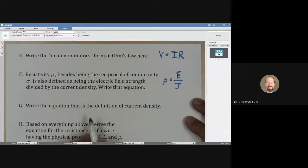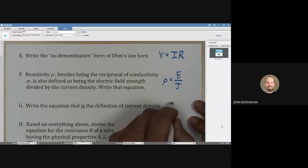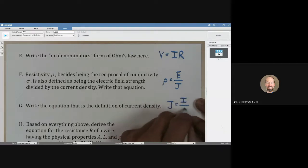Write the equation that is the definition of current density. Current density, J, is current per area.